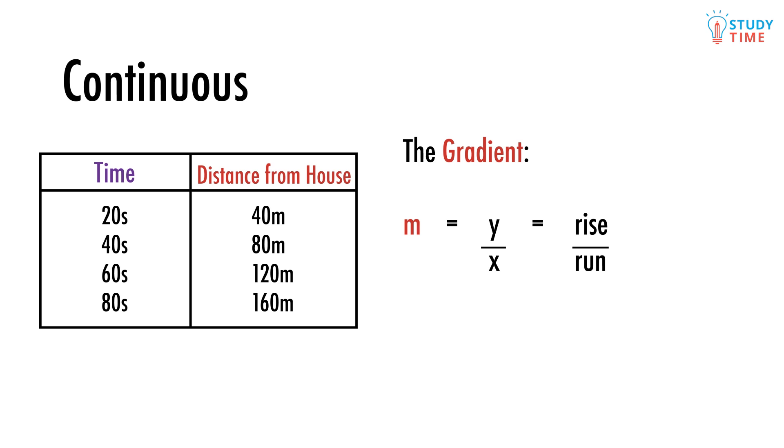If we took just the first row from our data table, we could calculate the gradient of the line. Our first measurement is 40 meters at 20 seconds, so 40 is our y value at this point and 20 is the x value. The gradient is y over x, rise over run, so it will be 40 over 20.